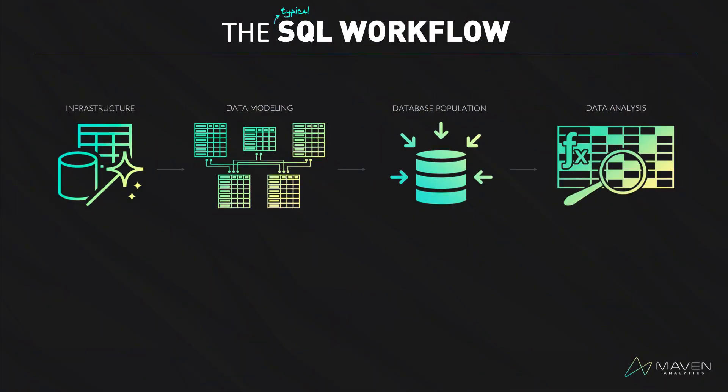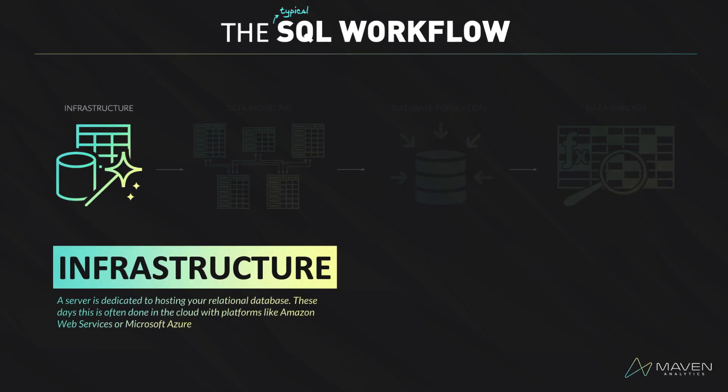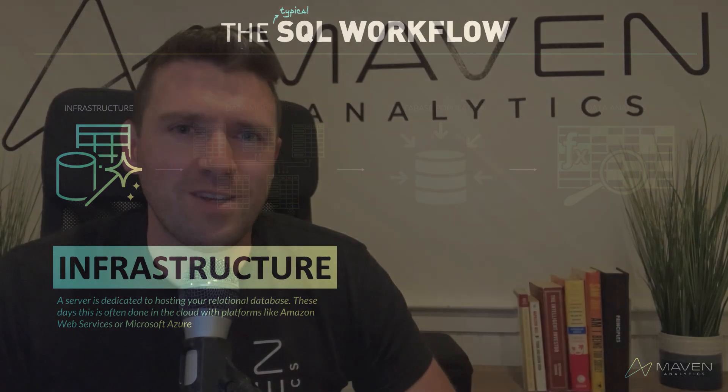Next, let's talk about how SQL is actually leveraged and implemented within an organization. We can break this down into four stages. The first step is setting up the infrastructure. The company will get a server running, and that server will be dedicated to hosting schemas and tables that will make up your relational database. In the old days, servers were hosted on site, but now it's more typical to run cloud-hosted servers with platforms like Amazon Web Services or Microsoft Azure. The infrastructure setup phase is typically done by a database administrator or a data engineer.